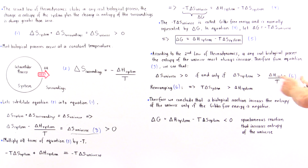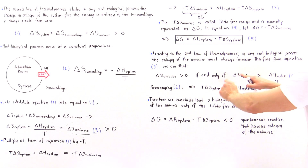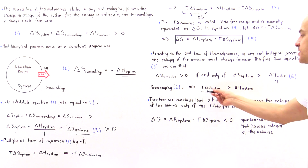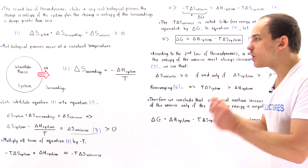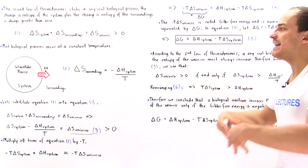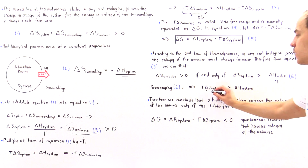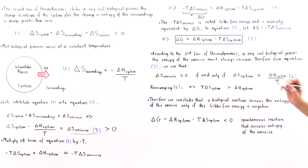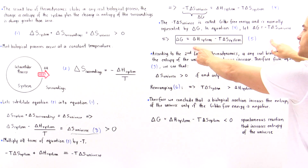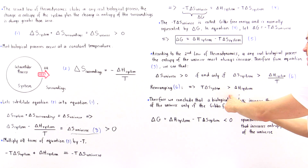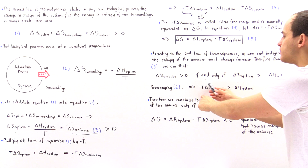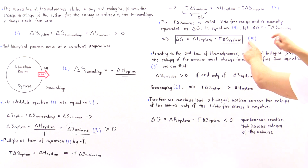If we take inequality six and multiply both sides by T, bringing T to the left side, we get the following: T multiplied by delta S of the system must be greater than delta H of the system. This tells us the condition under which a process actually increases the entropy of the universe. Looking at Gibbs free energy equation five, the right-hand terms correspond directly to these quantities.